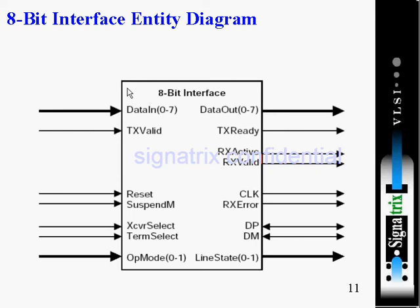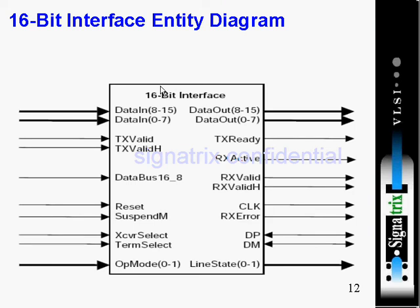Here you can see the pin description of the 8-bit interface of UTMI. These are the outputs of UTMI going to the function controller: TX ready, RX active, RX valid, clock, RX error, D plus, and D minus. D plus and D minus are the differential signals. These are the inputs coming from the USB function controller side.